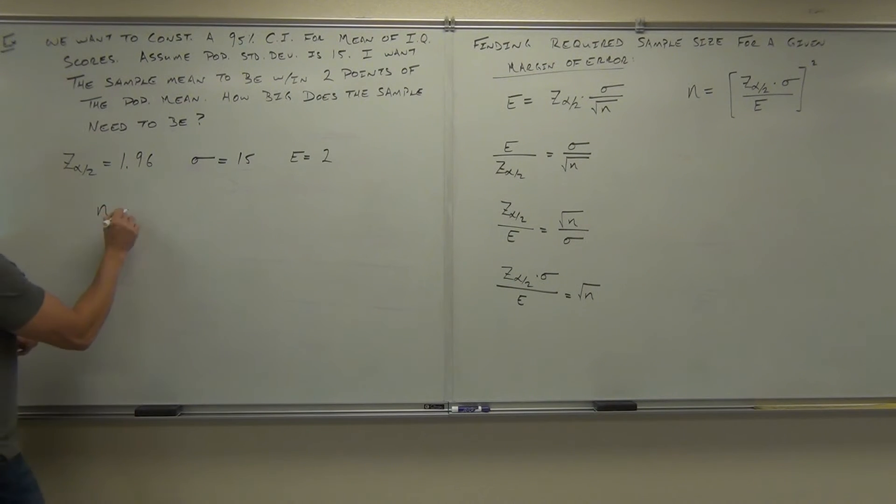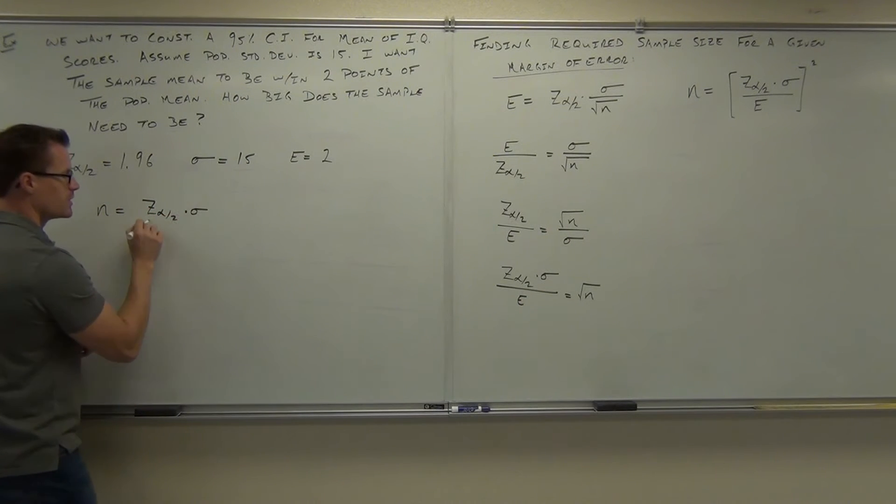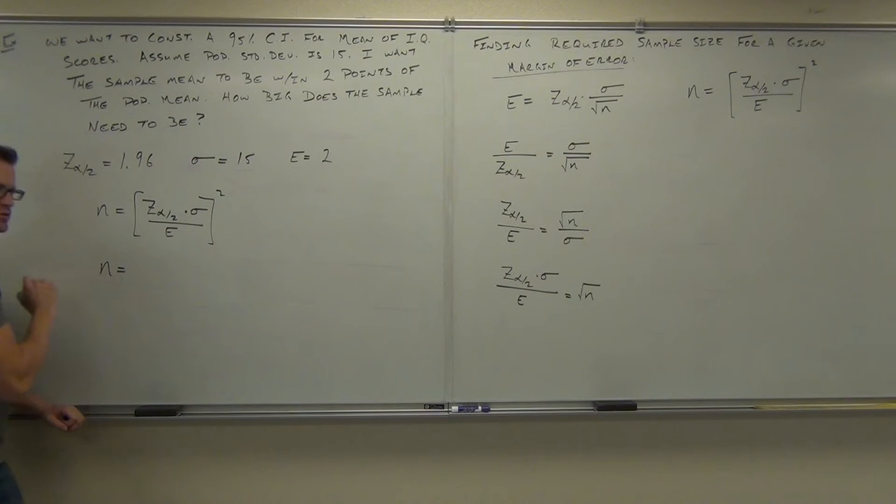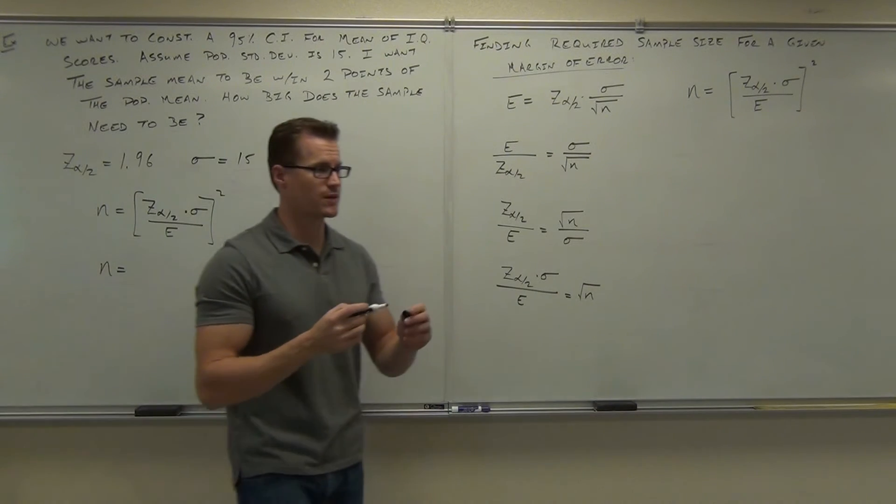So let's go ahead and try to figure this stuff out. We got n equals, well, we're going to have z alpha over 2 times our sigma all over our e. And then after that, we're going to square it all. So let's fill out that formula. Go ahead. Take 10 seconds. Try to do it yourself. See if you can get that.